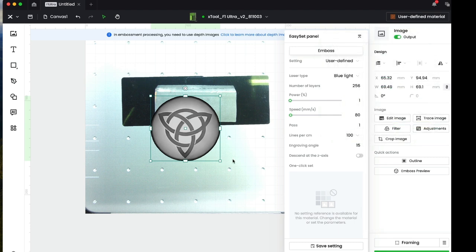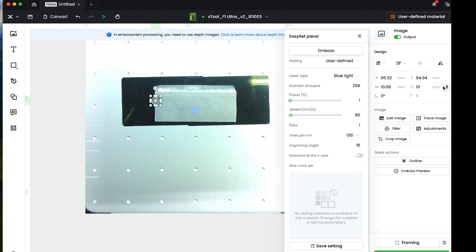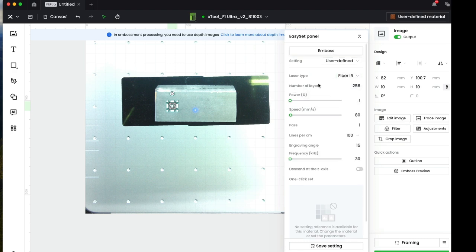And now we'll just size it and you've got two ways to size it. Obviously you can just pull it on the screen or you can go over here and say you want it to be 10 millimeters by 10 millimeters. So I ungroup them and group them back again. So now we have our little 10 millimeter bit that we're going to emboss. So over here we want to select the fiber IR and let's leave it at 256 layers. That's simply going to be the number of passes that it makes for each grayscale level. Let's give it 100% power. Let's set it somewhere between 150 and 250 millimeters per second. And I like to go at the highest resolution.